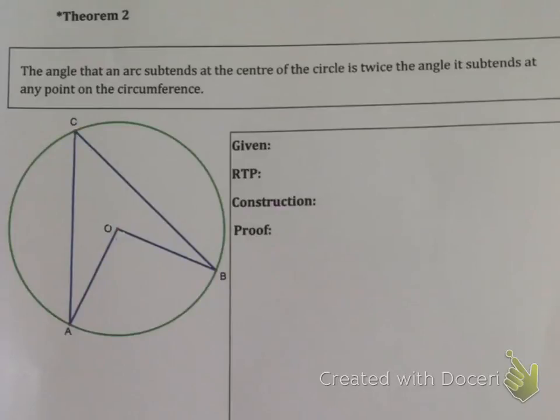Hi guys, we're back to proving the next theorem. The next theorem is Theorem 2. Theorem 2 has an asterisk next to it which means that this proof is examinable. It's actually a very common proof to be asked, so you must know how to prove it.